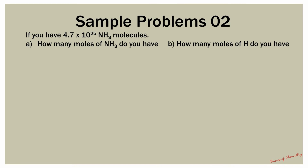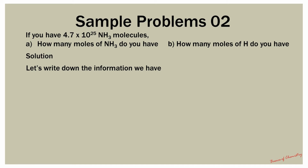Sample Problem 2: In this problem, we are going to calculate the number of moles from the total number of molecules we have. If you have 4.7 × 10²⁵ ammonia molecules, how many moles of NH₃ do you have, and how many moles of H do you have? We will write down the information we have. Number of molecules N we have is 4.7 × 10²⁵.